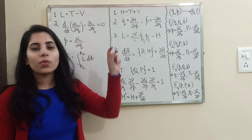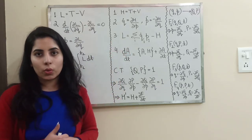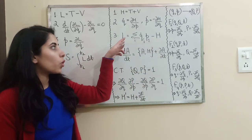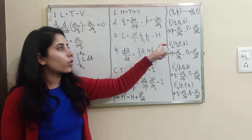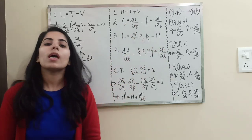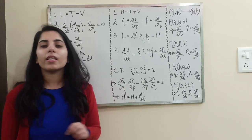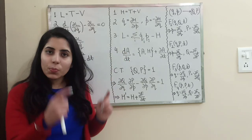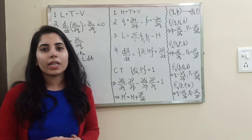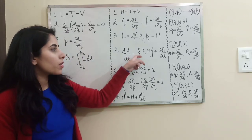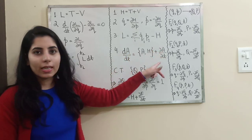The next equation provides the relation between Lagrangian and Hamiltonian. If Hamiltonian is given and you want to find the Lagrangian, you can use it directly, and vice versa. There is also a formula for the total time derivative of any variable A, which equals the Poisson bracket of A with the Hamiltonian, plus ∂A/∂t.